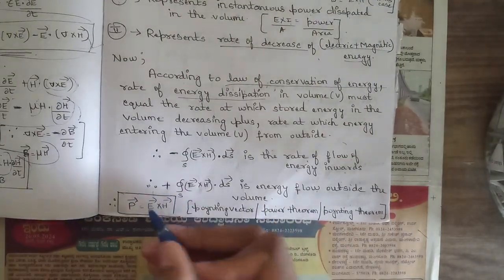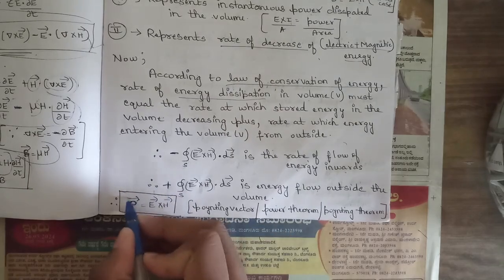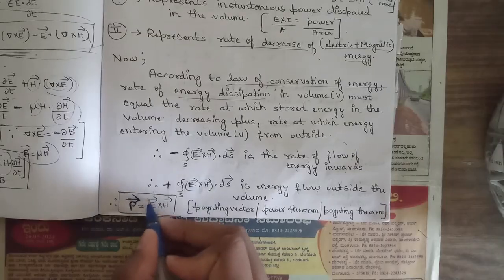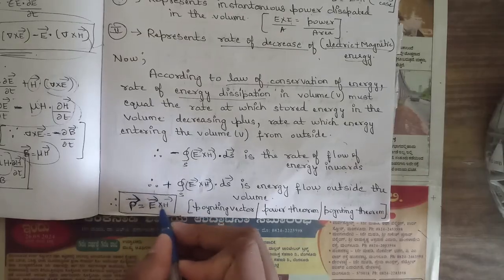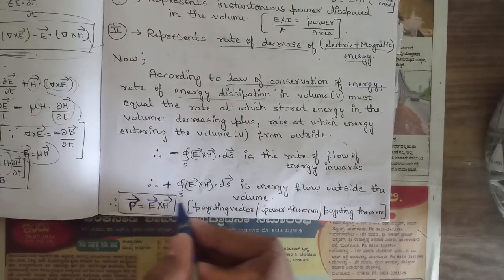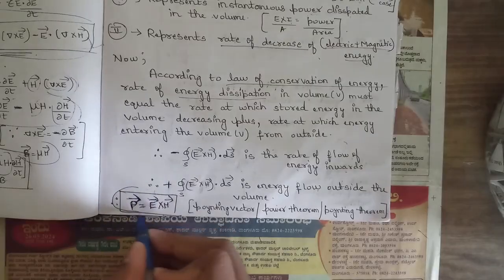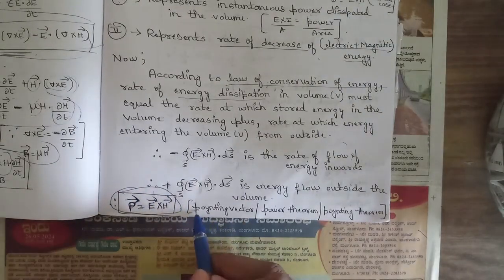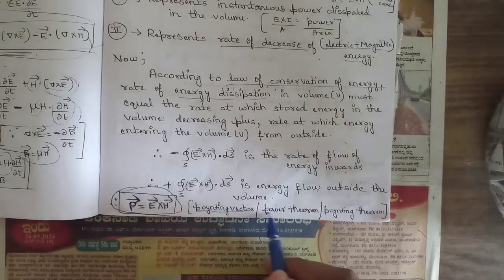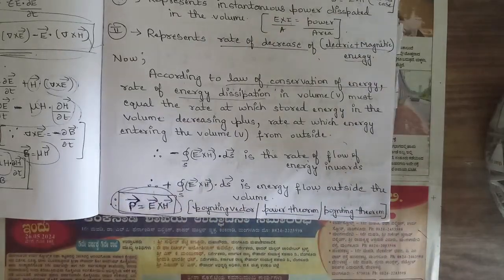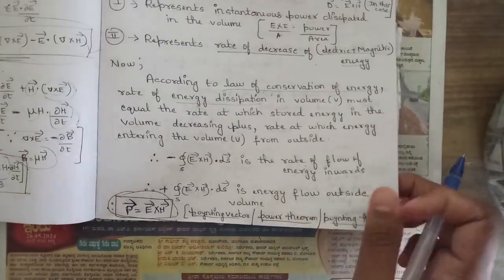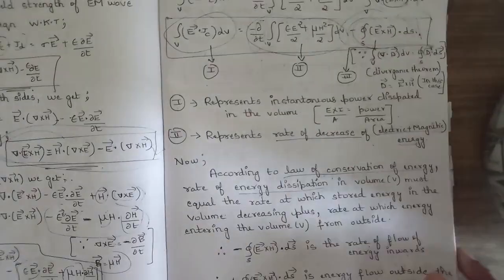Therefore we conclude that the surface integral of (E × H)·dS is the rate of flow of energy. The Poynting vector is defined as P = E × H. This is the relationship of the Poynting vector, also called the Poynting theorem or power flow theorem — this was the complete derivation.